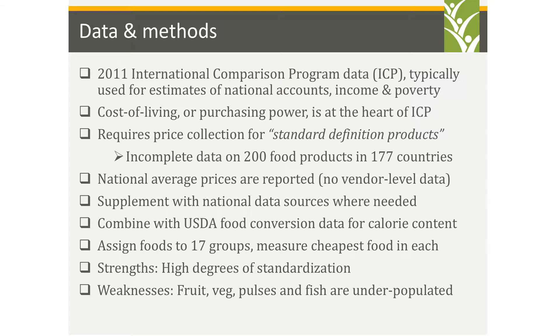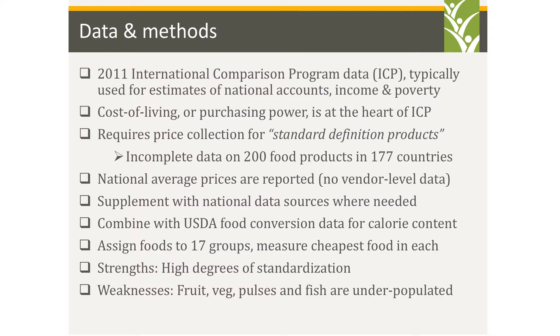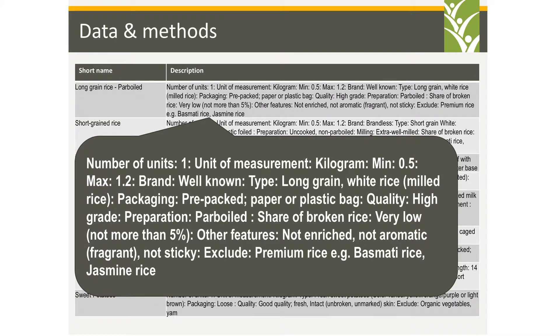We group foods into 17 food groups and measure the cheapest food in each — for example, the cheapest green leafy vegetable — relative to the cheapest cereal. Strengths include a high degree of standardization, unlike the ODI study where foods were defined differently across countries. Weaknesses: 200 food products around the world is not that many — in South Asia alone there might be 500 types of vegetables — so some categories are underpopulated. Most animal-source food categories are pretty well estimated. As an example of standardization, rice is defined as: long grain, white, milled, pre-packed in paper or plastic bag, high grade.